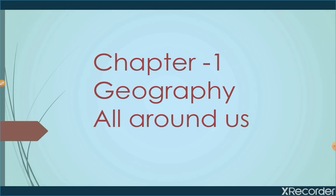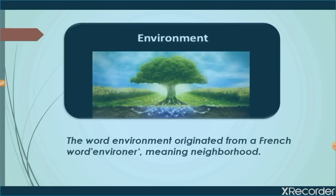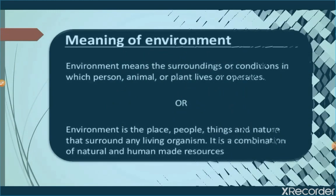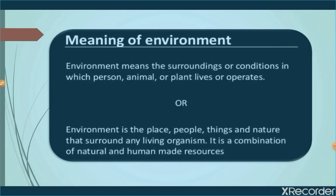In simple words, the totality of surrounding conditions is called environment. The word environment originated from a French word meaning neighborhood. Environment means the surroundings or conditions in which a person, animal, or plant lives or operates. It is a combination of natural and human-made resources. Natural resources means all the resources provided to us by nature, and human-made resources means all the resources which people make themselves.